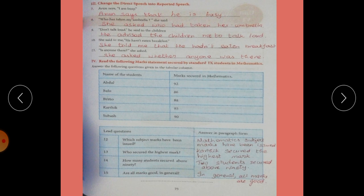Then fourth exercise. Read the following marks secured by standard nine students in mathematics. So what subject? Mathematics subject. Based on that, questions are given. We have to answer the questions. Question 12, which subject marks have been issued? Mathematics.